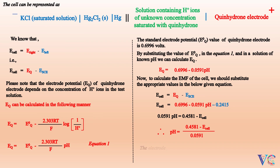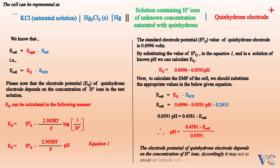The electrode potential of the quinhydrone electrode depends on the concentration of H⁺ ions. Accordingly, it may act as either anode or cathode with respect to the calomel electrode.